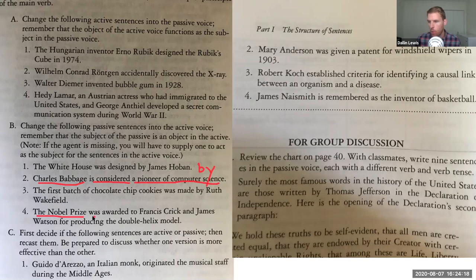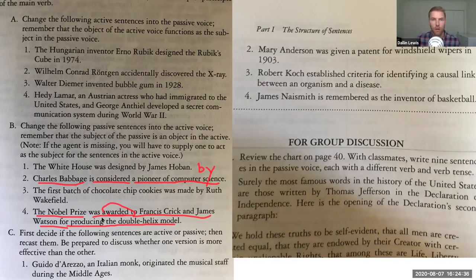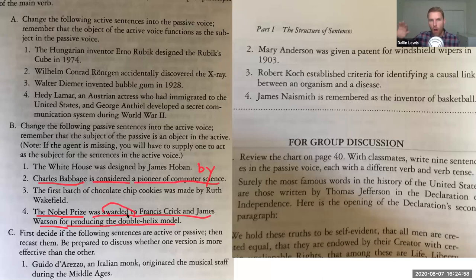'The Nobel Prize was awarded to Francis Crick and James Watson for producing the double helix model.' If we want to make that active, we have to figure out who is awarding them. 'Was awarded' becomes 'awarded' or 'awards.' We just have to figure out who our subject is — let's say the committee. 'The committee awarded the Nobel Prize to Francis Crick and James Watson for producing the double helix model.' To Francis Crick and James Watson, and for producing the double helix model, are all optional adverbial prepositional phrases. So all we need to do is move the subject into the object position, turn 'was awarded' into the past tense 'awarded,' and decide who the agent is — the committee.